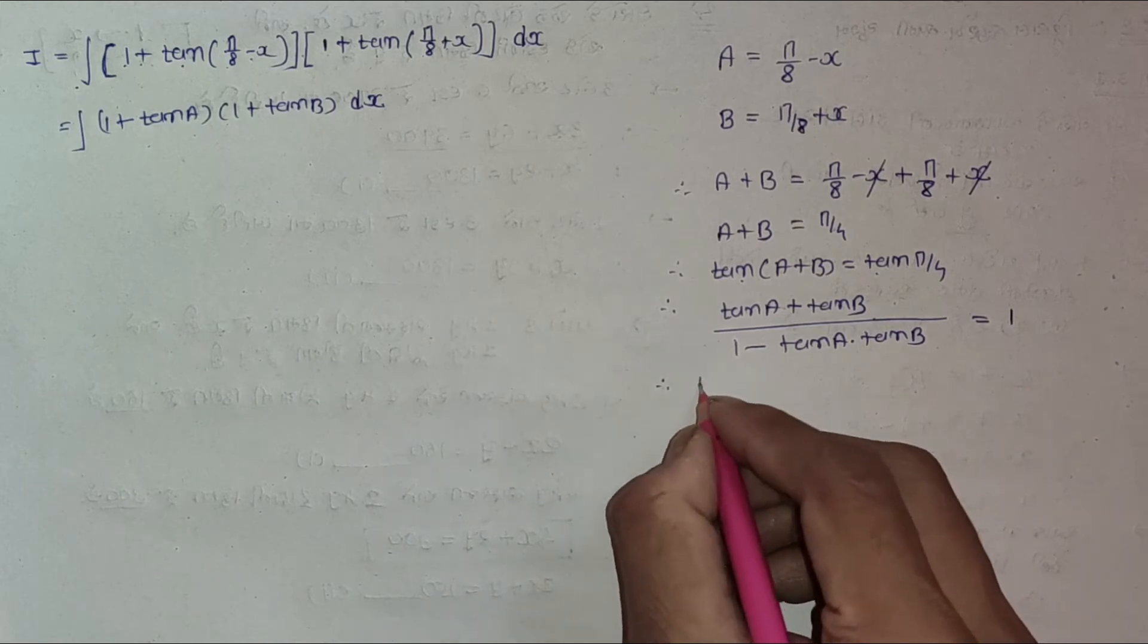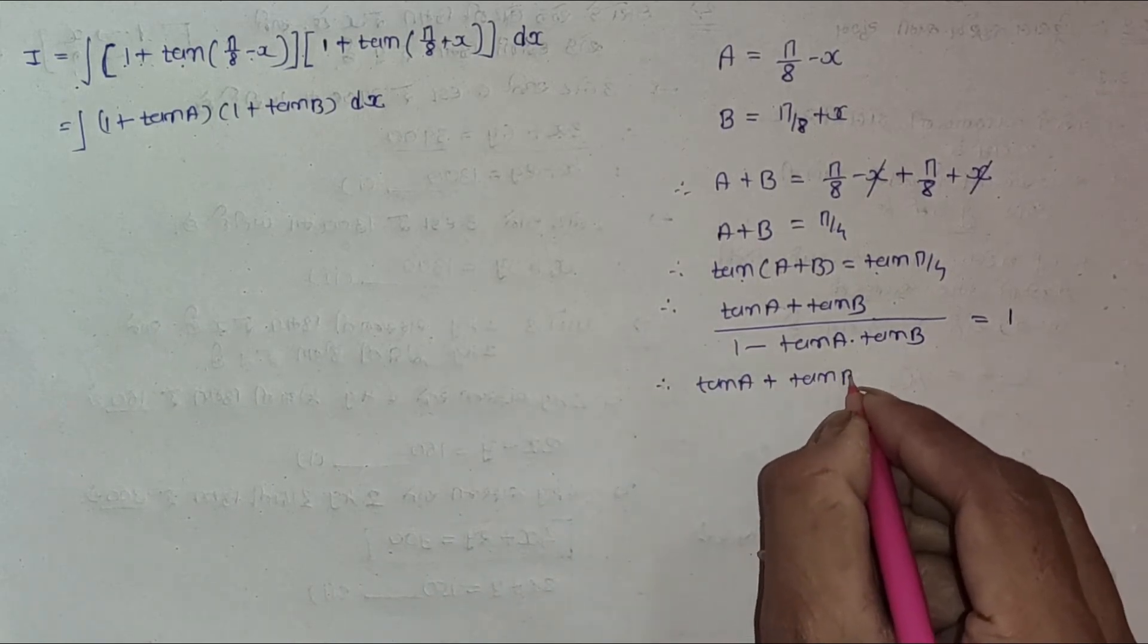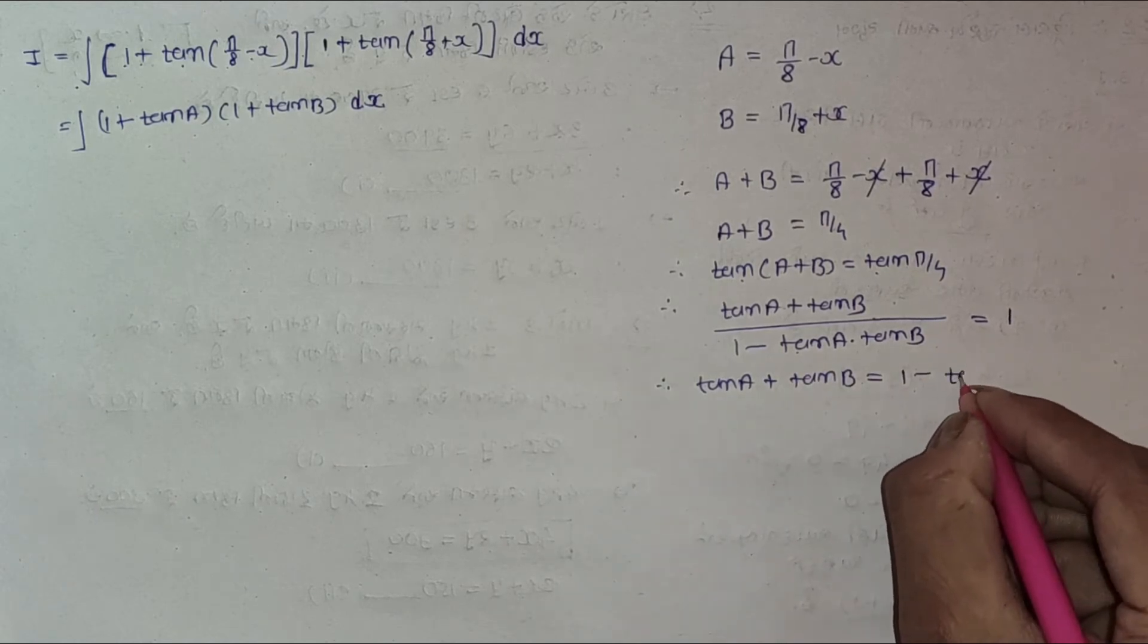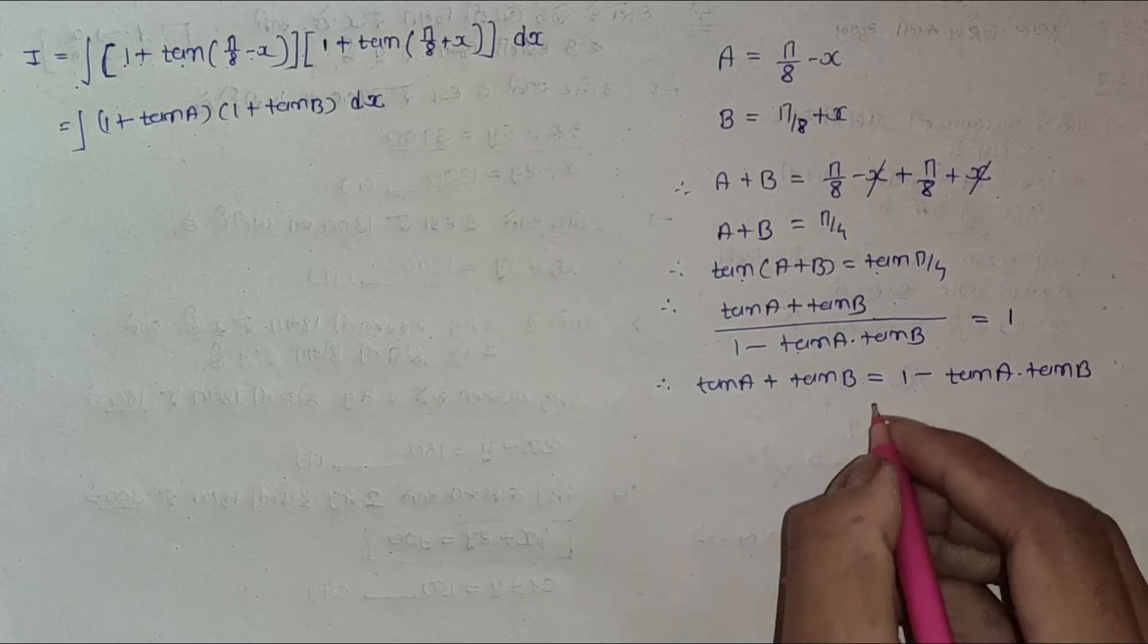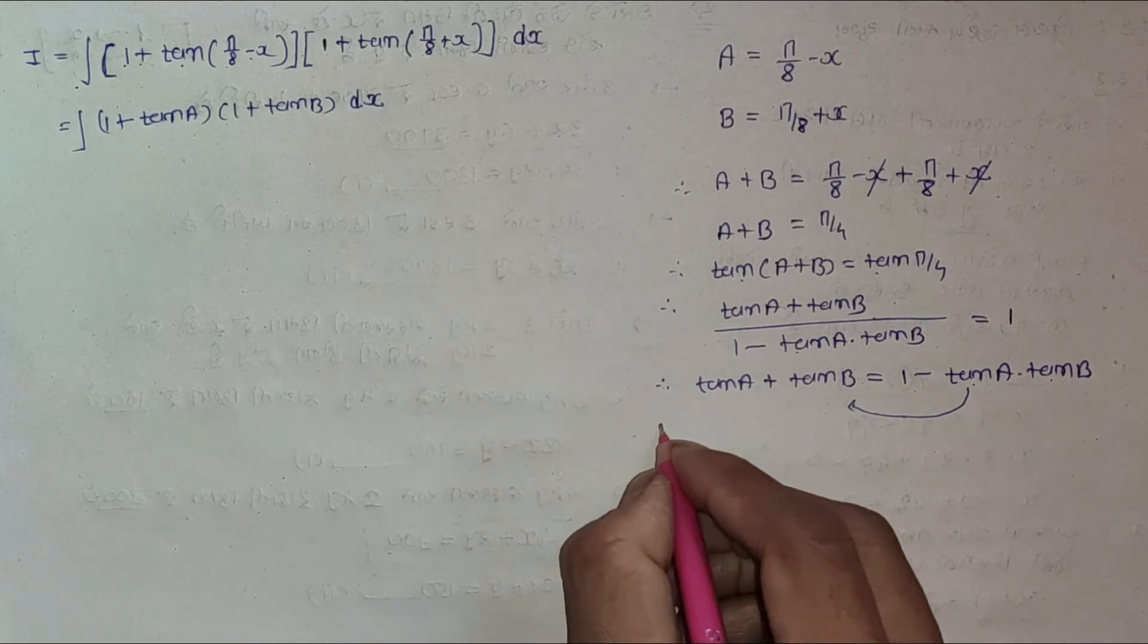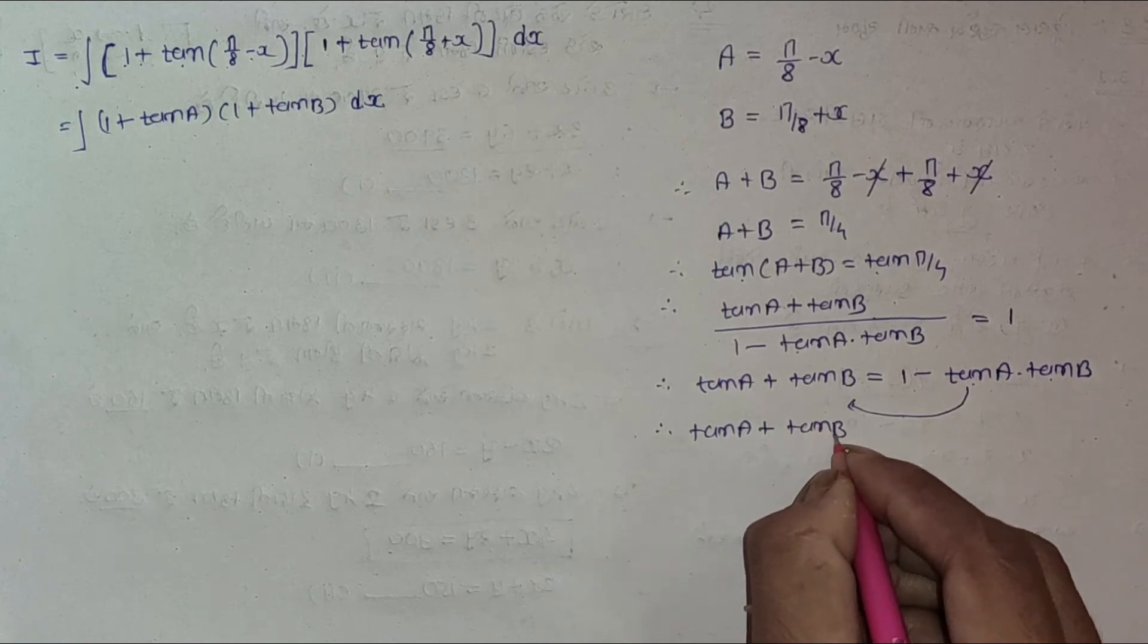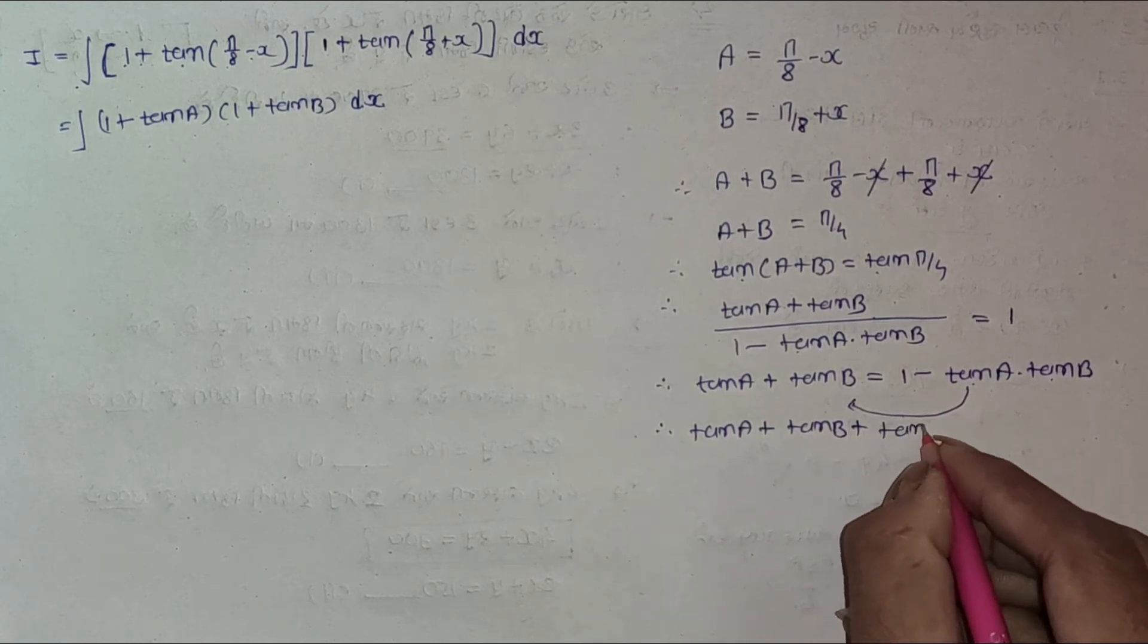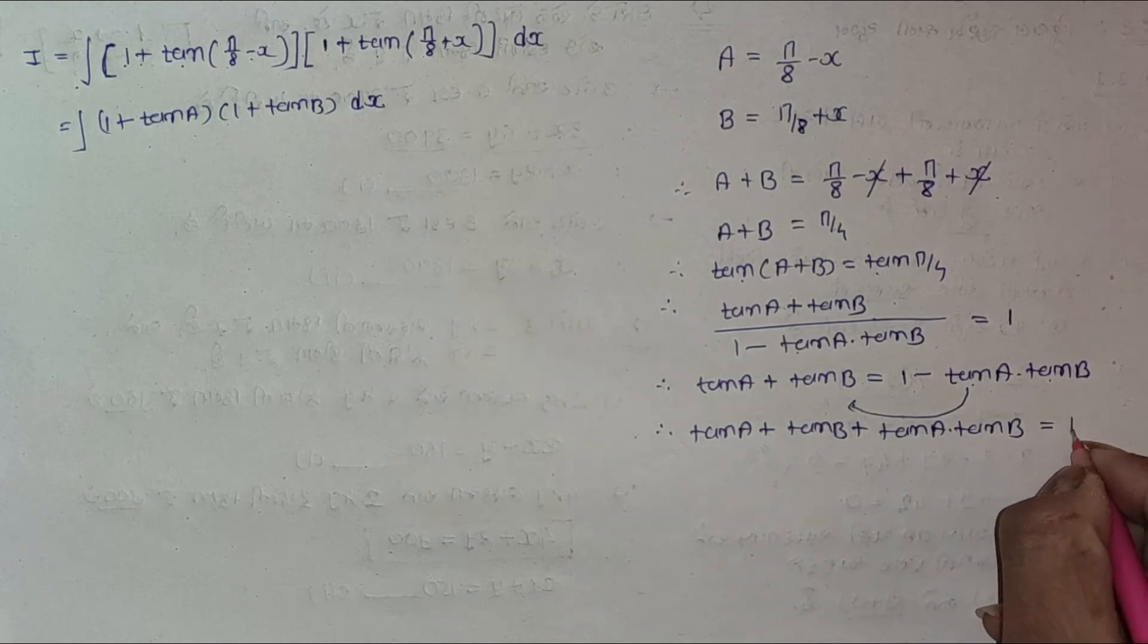Now it is tan A + tan B equals 1 - tan A · tan B. Move tan A · tan B to the right hand side. So we get tan A + tan B + tan A · tan B equals 1.